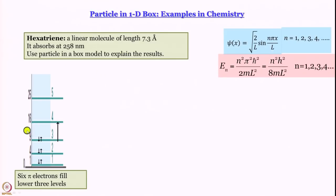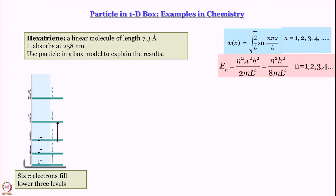What we are going to do is use the particle in a box model to explain this result. To do that, we will consider the pi electrons — when we talk about one pi electron in hexatriene, we consider that it acts as a particle in a box.